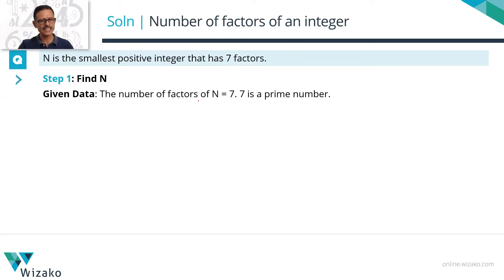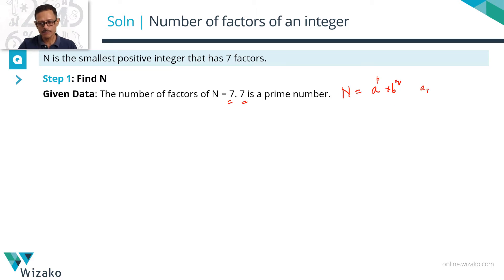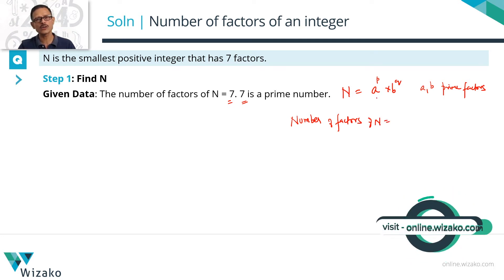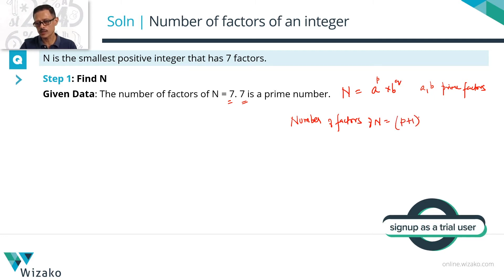The given data is: number of factors of N is equal to 7. Keep this number 7 — it is a prime number. If we prime factorize N as A to the power P times B to the power Q, where A and B are the only prime factors of N, then the number of factors of N can be found by the product of the powers of each prime number incremented by one. Essentially, number of factors of N equals P plus 1 times Q plus 1.